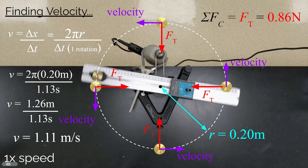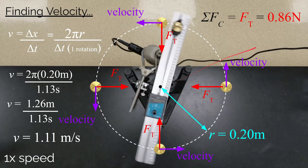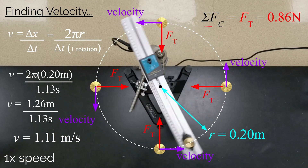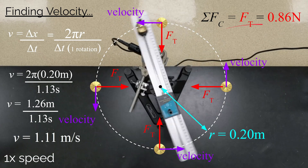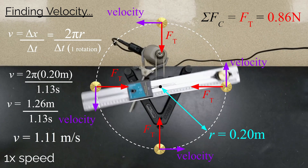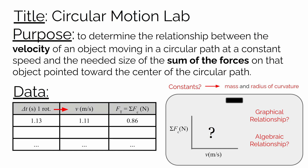The mass is moving at about 1.11 meters per second — that's our first data point. For a velocity of 1.11 meters per second, the required net force, the size of the sum of the forces pointed towards the center of the circular path, is about 0.86 newtons. When taking data, you'll have a third column for measured time per rotation, which lets you calculate velocity, and the wireless force sensor gives the needed net force size.